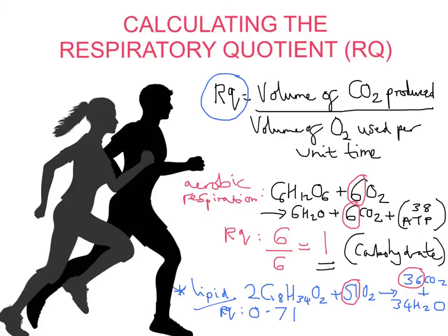So for carbs, we get an RQ value of 1. For lipid, we get an RQ value of 0.71. For protein, it's about 0.8 to 0.9. Now, one thing just to add to it, just to explain about the protein and fat side of things, fat and protein can actually be used to respire. It's not just glucose and carbohydrate.